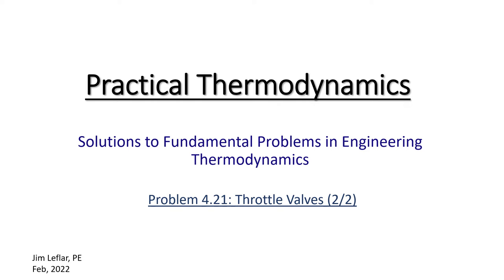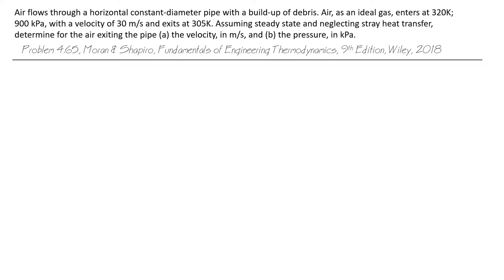Let's solve this second of our two throttle valve processes. Air flows through a horizontal, constant diameter pipe with a buildup of debris.